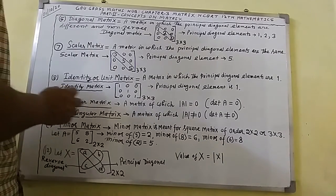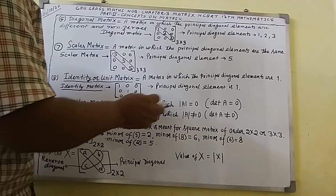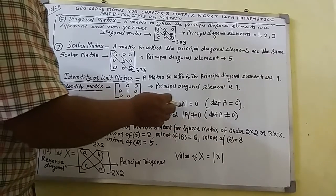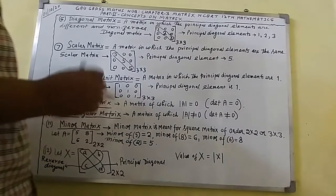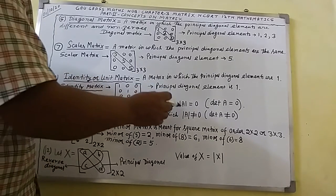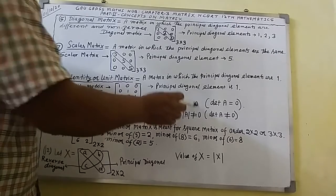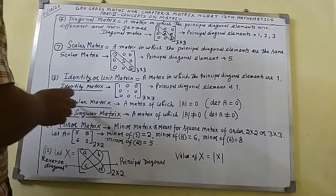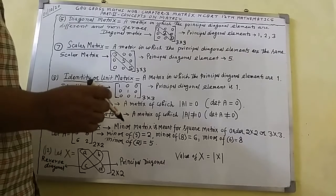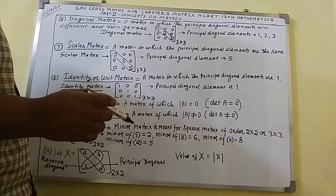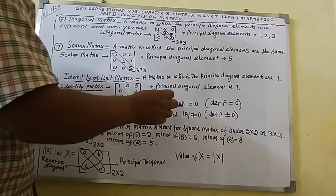Point number 9: singular matrix. A matrix of which the determinant, |A|, equals 0 is called a singular matrix. I shall later on discuss how to find the determinant of a matrix.